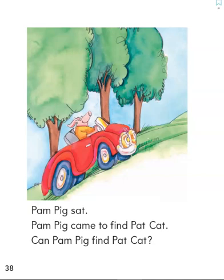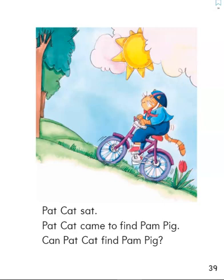Pointing finger under the first word. Ready, set. Pam Pig sat. Pam Pig came to find Pat Cat. Can Pam Pig find Pat Cat? It says Pam Pig sat. What did Pam Pig sit in? Yes, the car. And what is Pam Pig going to do? She's trying to find Pat Cat. Let's continue. Pat Cat sat. Pat Cat came to find Pam Pig. Can Pat Cat find Pam Pig? Friends, what is Pat Cat riding on? A bicycle. And what is he doing? He's trying to find Pam Pig.